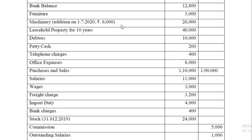Once you calculate the total depreciation on machinery, it should be deducted from machinery on the asset side of the balance sheet. Depreciation on furniture should be debited to profit and loss account, and in the balance sheet, furniture is shown less depreciation. Leasehold property for 10 years means the life is 10 years, so it must be amortized. This is a hidden adjustment: 40,000 divided by 10 equals 4,000. 4,000 should be charged to profit and loss account, and in the balance sheet, 40,000 minus 4,000 = 36,000.